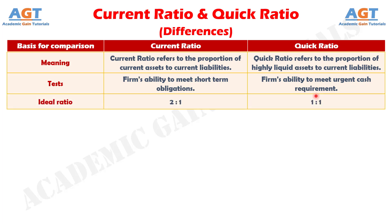Number three: ideally, a current ratio of two-to-one and a quick ratio of one-to-one is considered favorable for the company. However, the two might differ on the basis of the nature of the business, type of current assets, and industry.